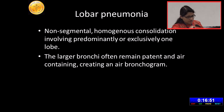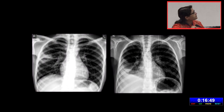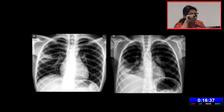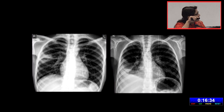This is how lobar pneumonia will look on the chest radiograph. This is a frontal chest radiograph — you can see a wedge-shaped opacity in the right upper zone which is limited by the fissure. So it is lobar pneumonia, probably of the right upper lobe.